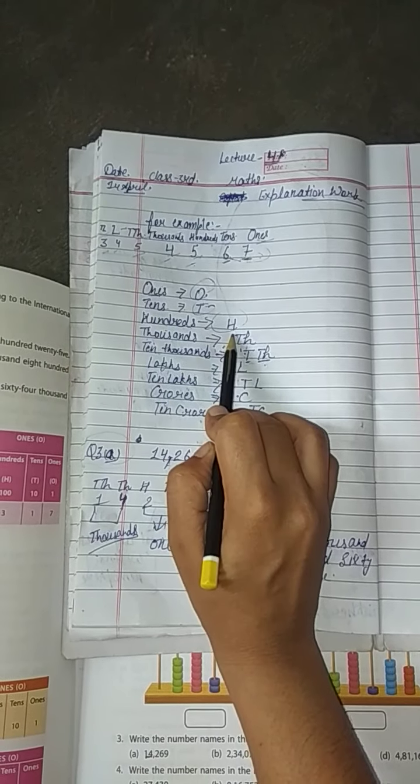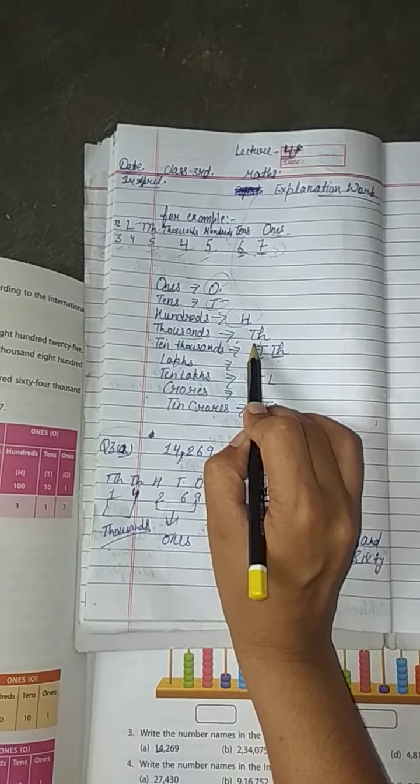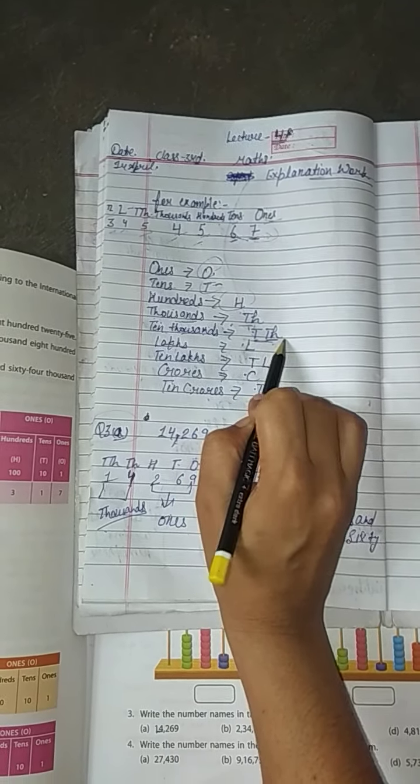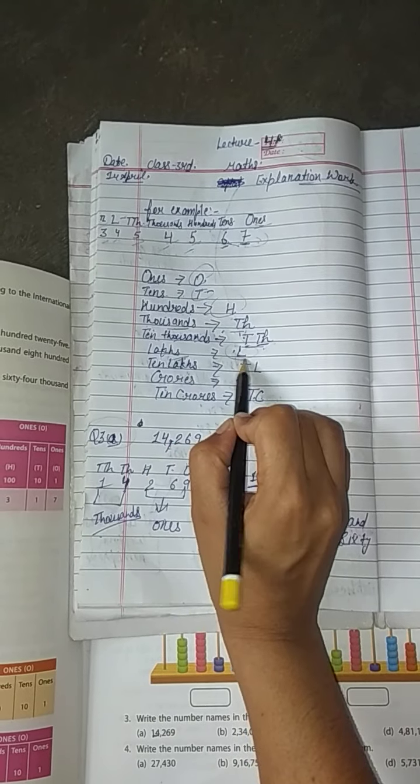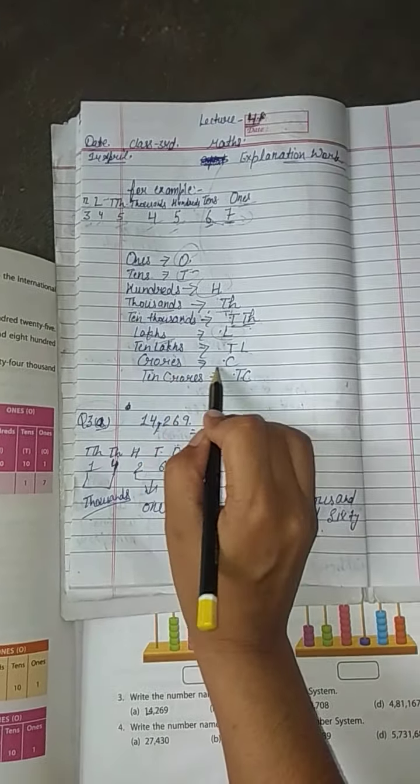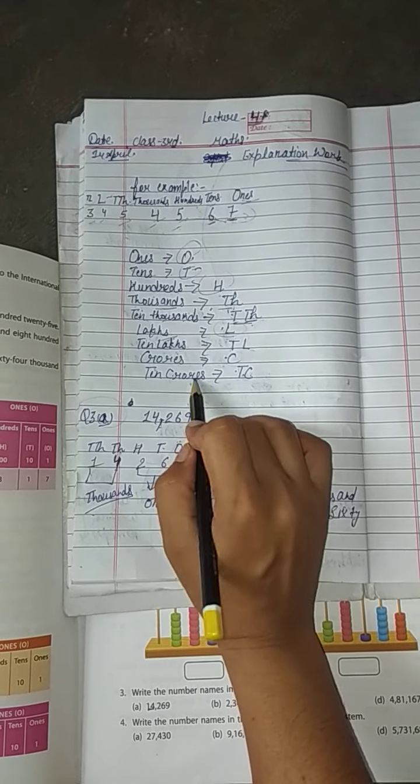Ones is denoted by O, tens is denoted by T, hundreds is denoted by H, thousands is denoted by TH, ten thousand is denoted by TTH, lakhs is denoted by L, ten lakhs is denoted by TL, crore is denoted by C, and ten crore is denoted by TC.